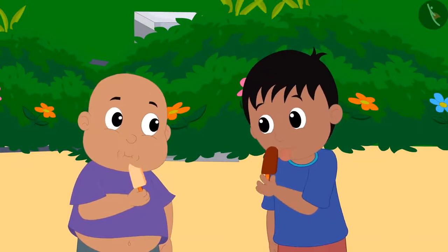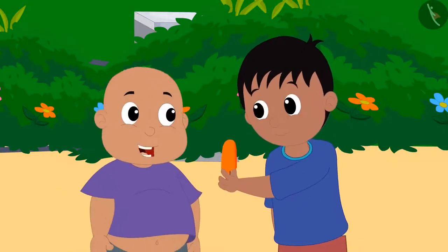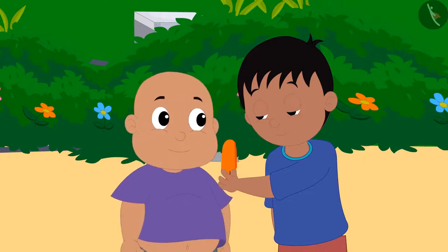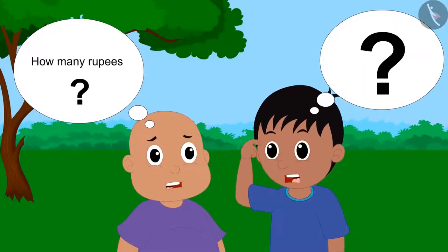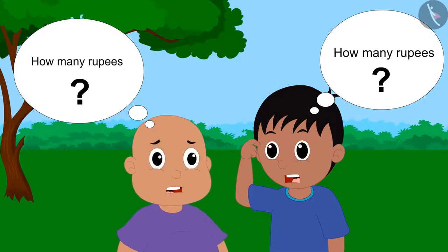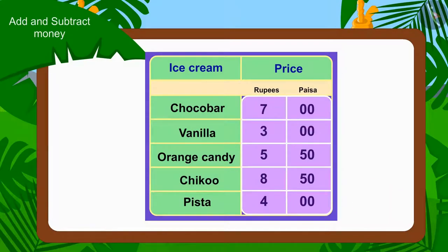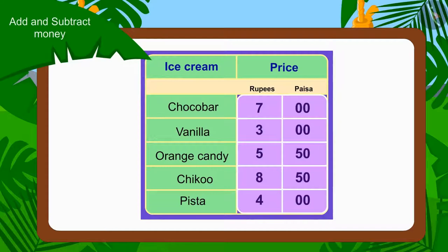Raju and Bablu first ate one choco bar ice cream and one vanilla ice cream. Then both of them got together and shared one orange candy. Now both of them are thinking how much they have to pay for the ice cream to Babban. Kids, can you help them? Come, let's solve it together.